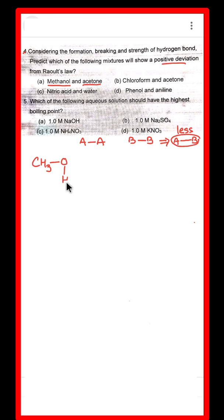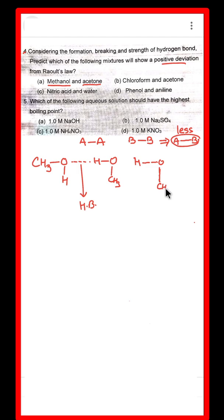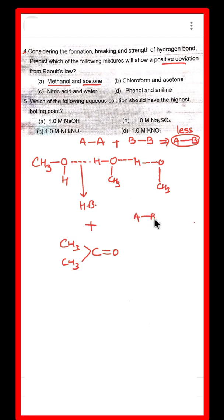In pure methanol, hydrogen bonding between methanol molecules is strong, which keeps vapor pressure lower. When acetone (B-B type molecules) is added to methanol (A-A type), the A-B interactions formed break the original hydrogen bonding. Since the new A-B interactions are weaker, vapor pressure increases — this is positive deviation. So methanol and acetone is the first and correct answer.